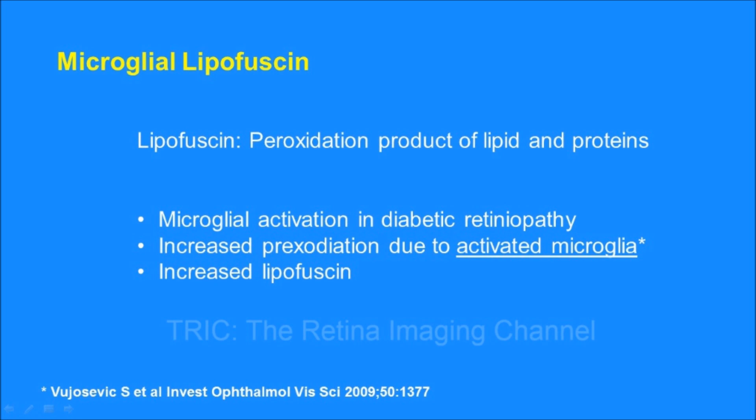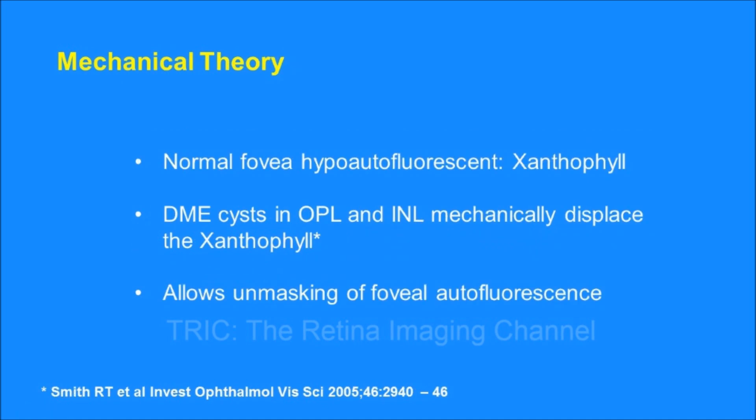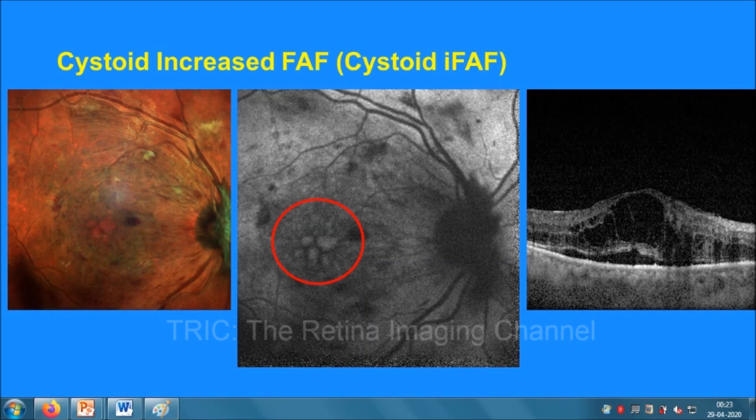Apart from this, there is another theory called the mechanical theory of hyperautofluorescence in diabetic retinopathy. The cysts in cystoid macular edema are located in the outer plexiform and inner nuclear layers. They are believed to displace the luteal pigment xanthophyll away from the fovea, unmasking the foveal autofluorescence which is normally hyperautofluorescent. This hypothesis explains the hyperautofluorescence in DME which has a cystoid pattern at the fovea, and is called cystoid increased fundus autofluorescence, or cystoid IFF.